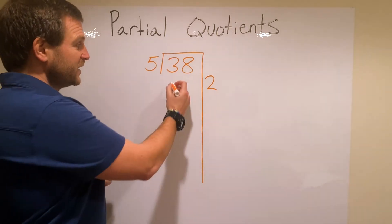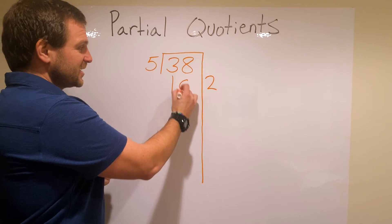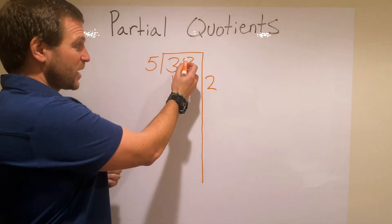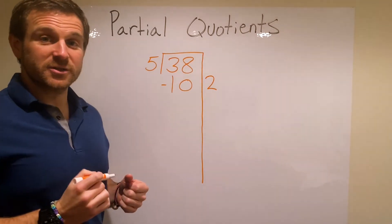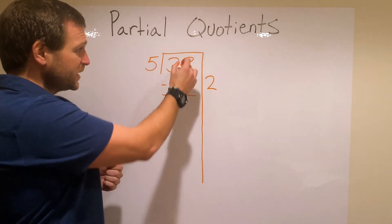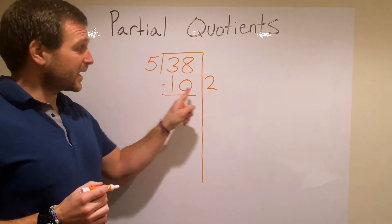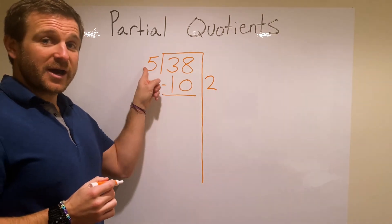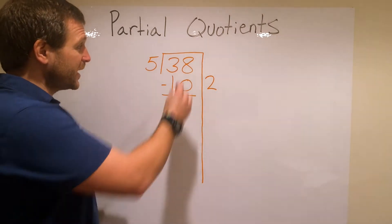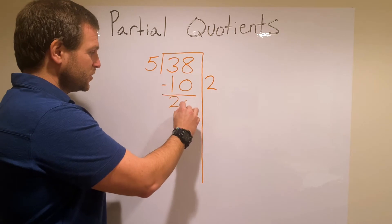2 groups of 5 equals 10. So since I took those out of my equation, I can subtract them from my original dividend. So I do 38 minus 10—again that 10 right here came from 2 groups of 5. So 38 minus 10 gives me 28.